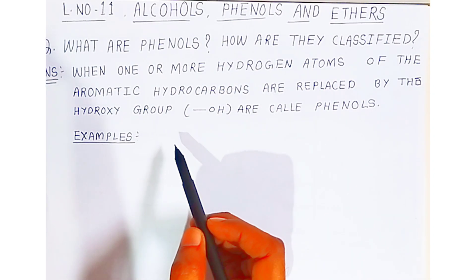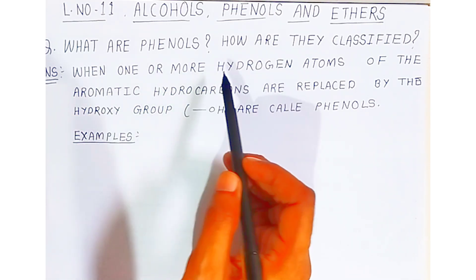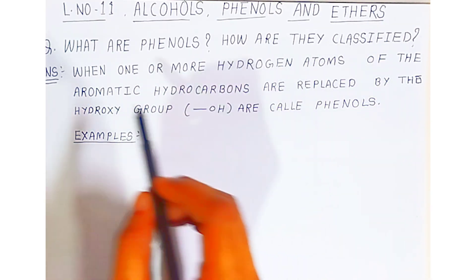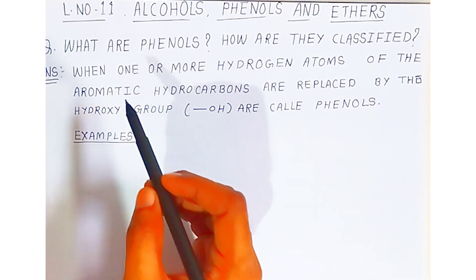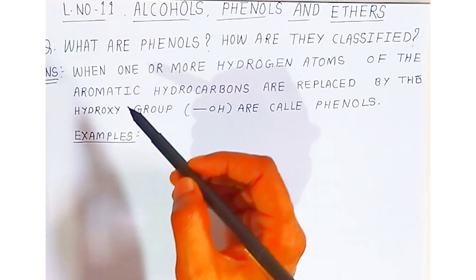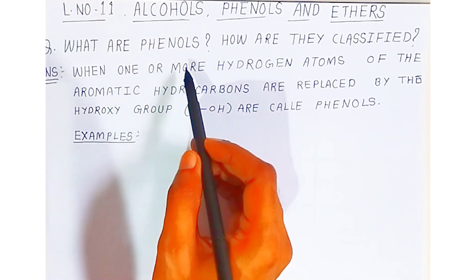So students, for a board examination they are asking: what are phenols and how are they classified? For two marks students, they may ask in the board examination. So this way students, you have to represent the answer. What are phenols?